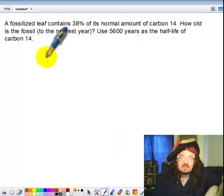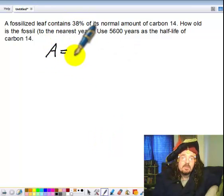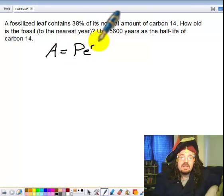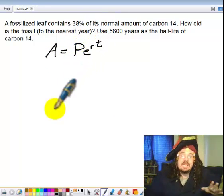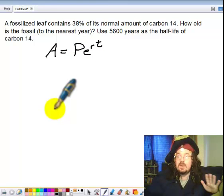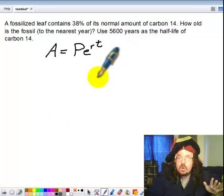Since this is radioactive decay, I will use A=Pe^(rt). Now traditionally people use other letters for this, but I like using A=Pe^(rt) because then I just have one formula to memorize, and really the only difference is in what you call the letters.